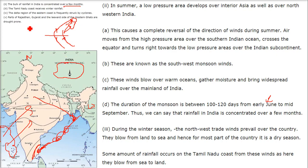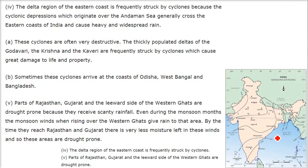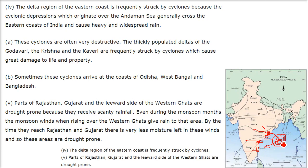The delta region of the eastern coast is frequently struck by cyclones. This is the delta region of the eastern coast — including Godavari, Krishna, and Kaveri deltas. Cyclonic depressions which originate over the Andaman Sea generally cross the eastern coast of India and cause heavy and widespread rain. These cyclones are quite destructive to the thickly populated delta regions of Godavari, Krishna, and Kaveri, and sometimes arrive at the coasts of Odisha, West Bengal, and Bangladesh.